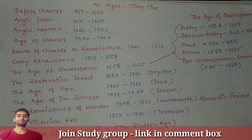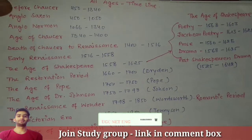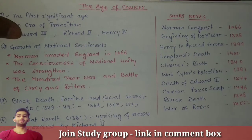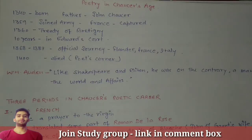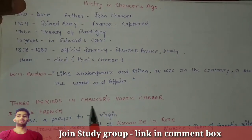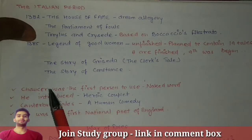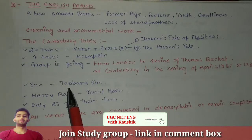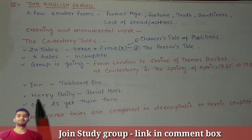Hello everyone, you are most welcome again on my channel. As you know, we are doing history of English literature. In previous videos, we talked about all ages chronology, then the age of Chaucer and its social conditions. The third video was about poetry in Chaucer's age, discussing three periods in his poetic career: the French period, the Italian period, and the English period. So let's go through this period and see some facts for our exams.